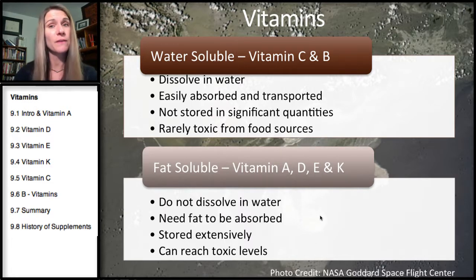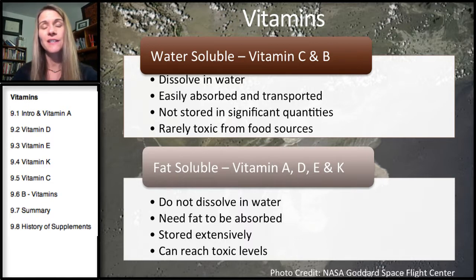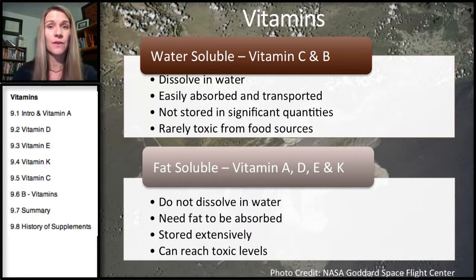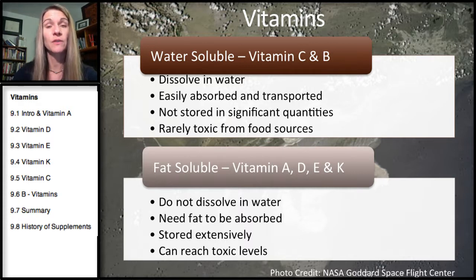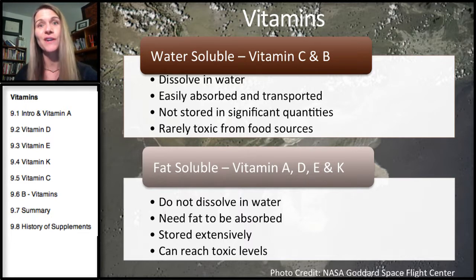Vitamin C and all the B vitamins are water-soluble, which means they're going to dissolve in water, so they're easily absorbed and transported. Why is that? It's because the digestive juices are water-based, and so is the bloodstream. So it's very easy for them to be absorbed and then transported throughout the body. But because they're water-soluble, they're not going to be stored in any significant quantities — you won't see them build up as much as the fat-soluble vitamins. This also means they're rarely toxic. If they're not building up or being stored, they're not going to be toxic.